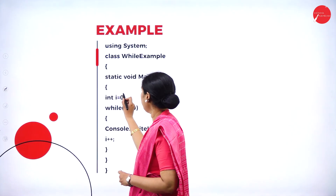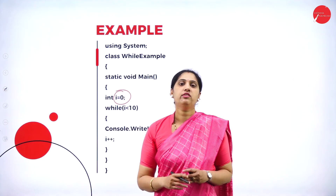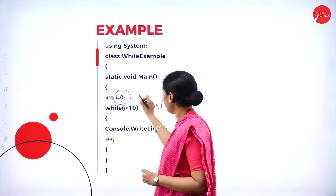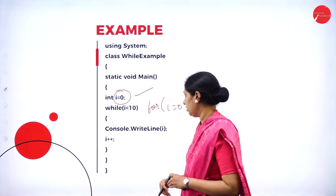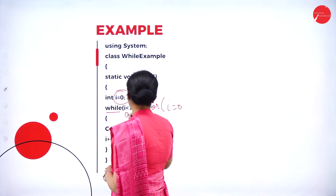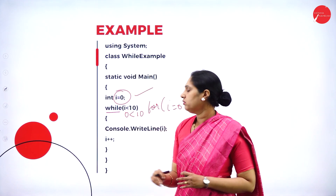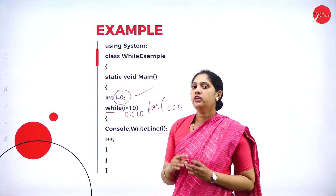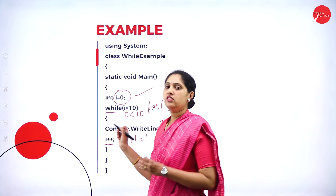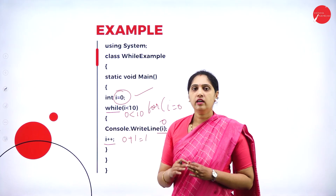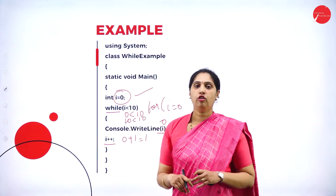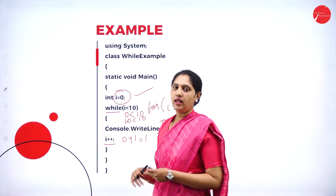Let's go with an example. First, we initialize i to 0. In the for loop we wrote the initialization inside the bracket, but here we initialize at the beginning — say i is a variable of type integer. Then the condition: while i is less than 10. First time i is 0, 0 less than 10 is true. If true, the code executes and prints 0. Then we increment i: 0+1=1. This repeats until i is 10; when 10 less than 10 is false, it comes out of the while loop.